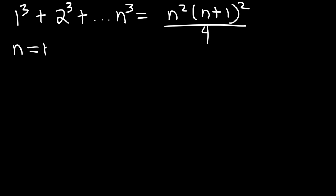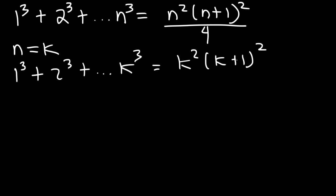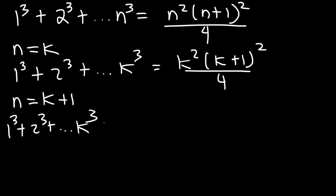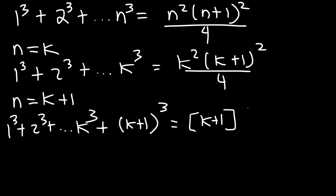So we're going to assume that n equals k and it's true when n is equal to k. So we're going to have 1 to the 3rd plus 2 to the 3rd plus k to the 3rd, and that's going to equal k squared times k plus 1 squared over 4. Now, assuming the equation is true when n is k, we need to prove that it's also true if n is k plus 1 — the next term. So we're going to have 1 to the 3rd plus 2 to the 3rd and then k to the 3rd, and the next term after k is k plus 1 to the 3rd. On the right side, everywhere you see a k, replace it with k plus 1, so this is going to be k plus 1 squared times k plus 1 plus 1 squared divided by 4.